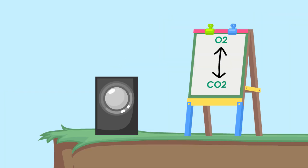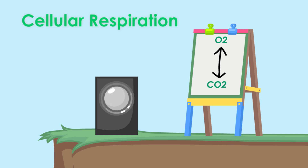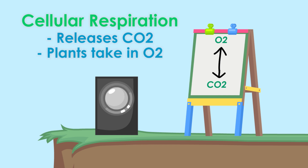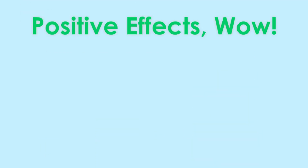The O2 and CO2 cycle is also shown in the ponds. Cellular respiration releases CO2 into the air, and the plant life takes it in and converts it to O2.